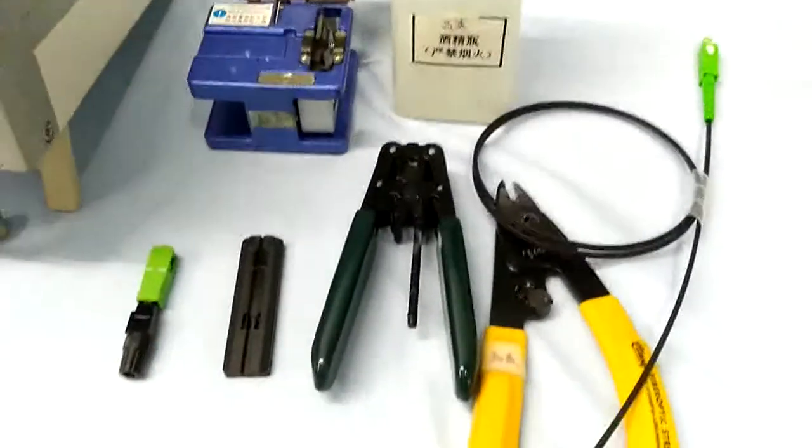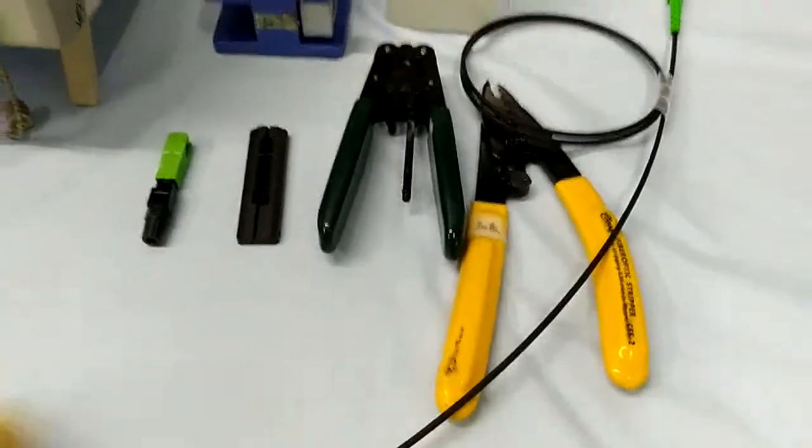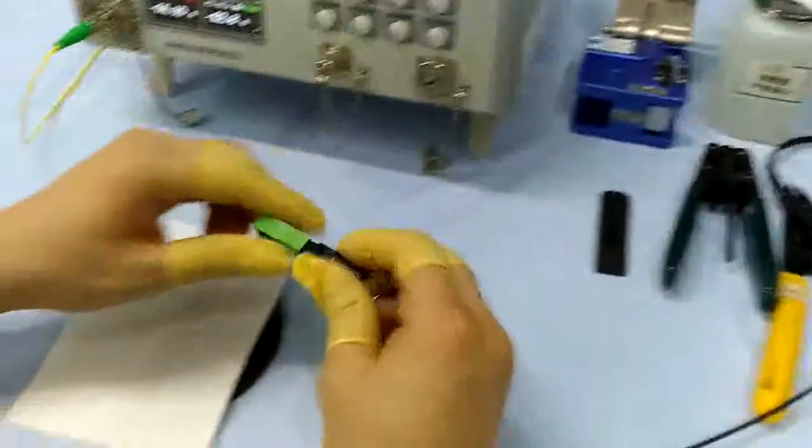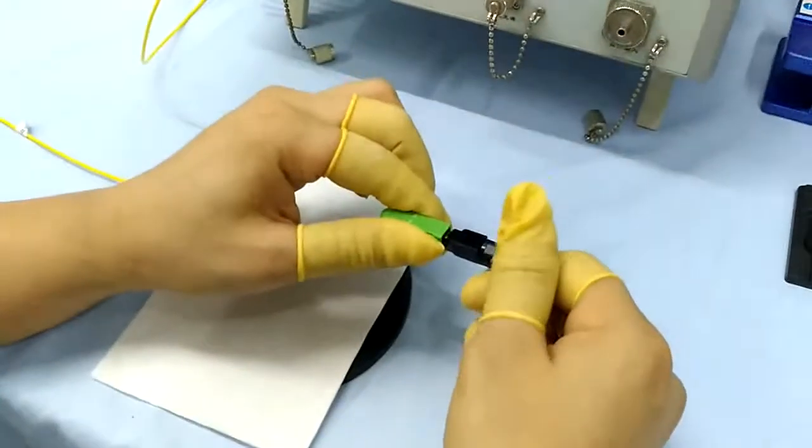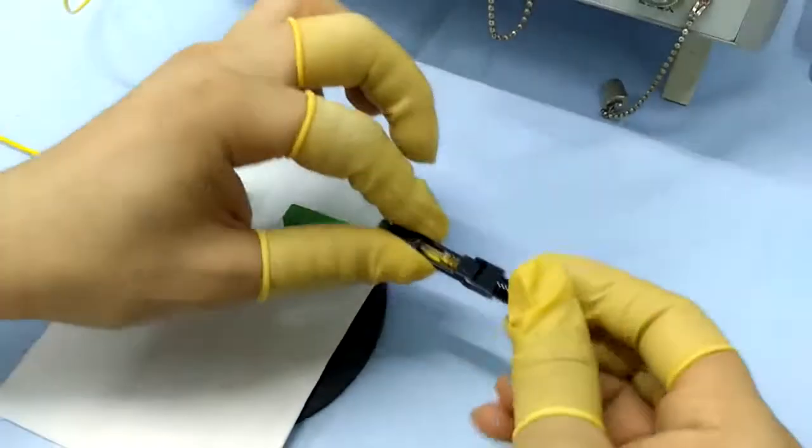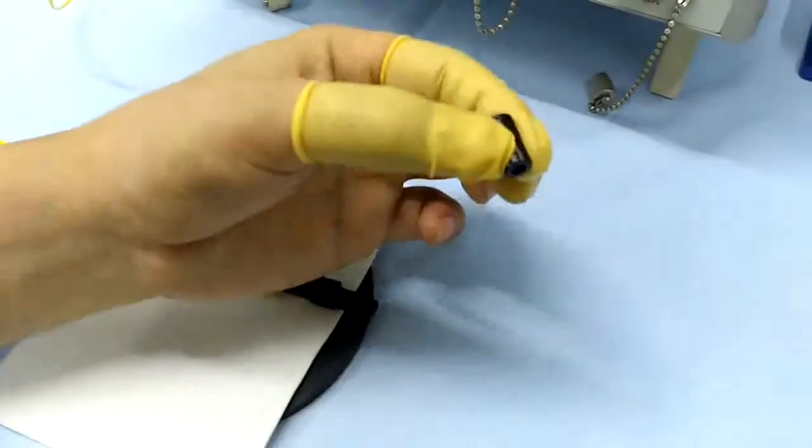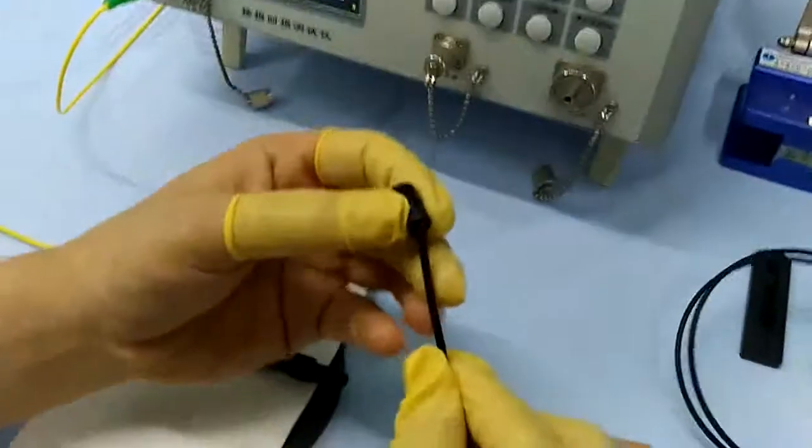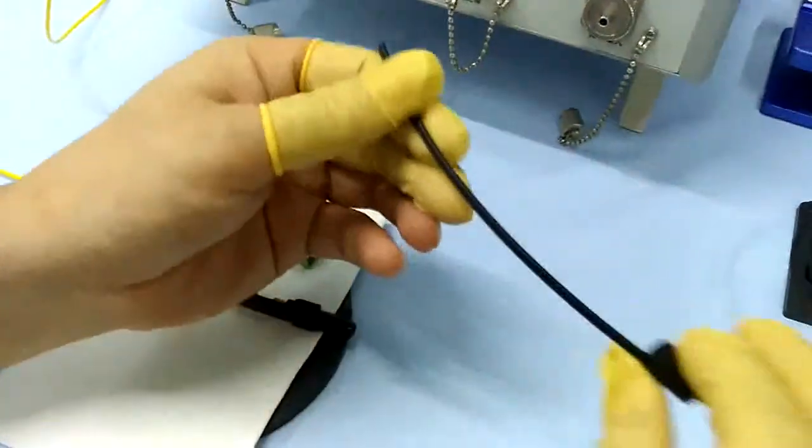Simple tools, easy assembly. Now let's start the assembly. First take off the housing and take off the screw boot. Put the drop cable through the screw boot.